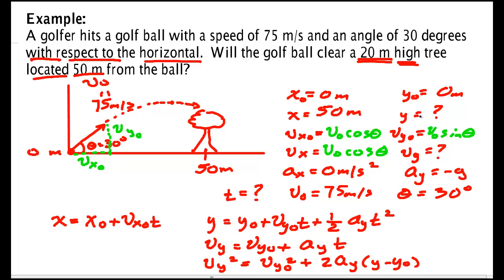VX naught is the same as VX, so this is V naught cos theta. Now let's see. I don't know Y, I don't know VY, I don't know T. Three unknowns, four equations. In fact I have more equations than unknowns, so I'm going to be able to solve this in more than one way.